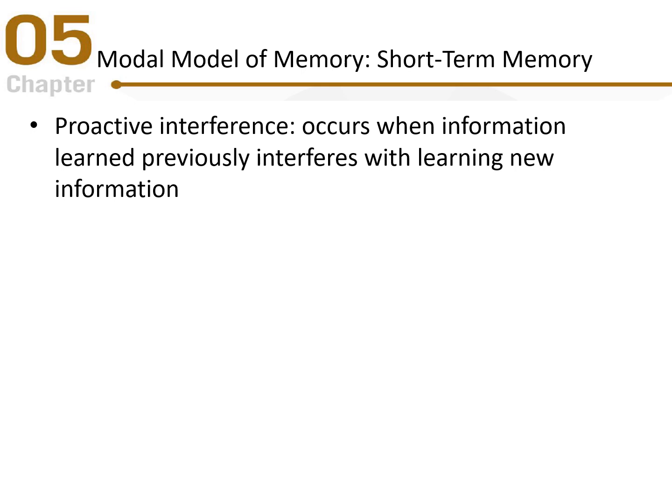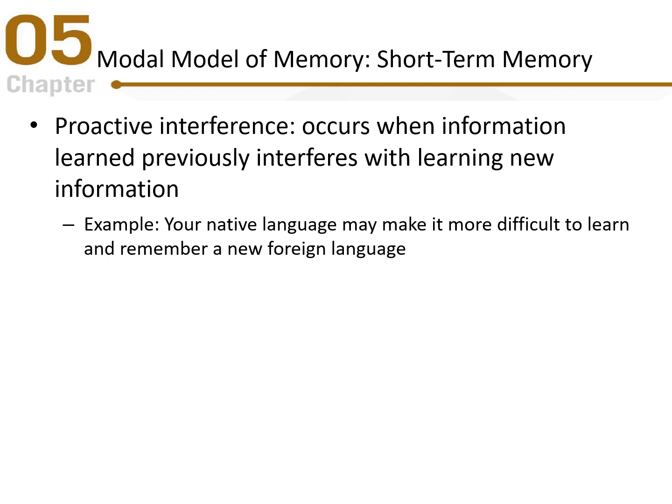Two types of interference can affect short-term memory. Proactive interference occurs when previously learned information interferes with learning something new. For example, your native language may make it more difficult to learn and remember a new foreign language. Students who are very fluent in their native language often find it much harder to learn a second language later in life.